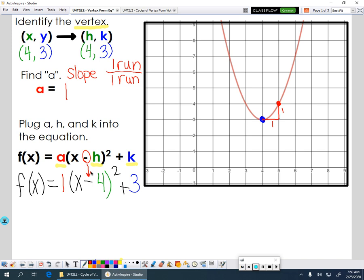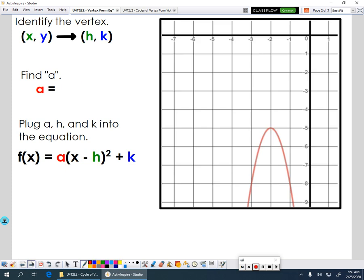When you look at vertex form, your vertex looks like the opposite of your h value here and then your k value. So let's look at another example. We're going to start by identifying our vertex. The vertex is right here. So if I look at that, it's going to be a negative 2, negative 5.